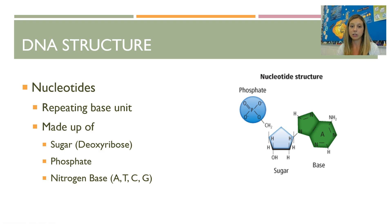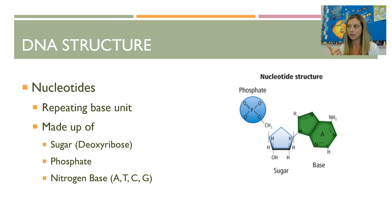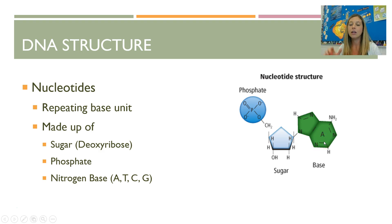Back in macromolecules, you memorized that a nucleic acid is made up of nucleotides. A nucleotide has three parts: a sugar called deoxyribose (that's where the 'deoxyribo' in DNA comes from), a phosphate group, and a nitrogen base — either A, T, C, or G. You can see here an adenine nucleotide as an example. Those three things together make up the subunit, and that subunit repeated over and over makes a molecule of DNA.